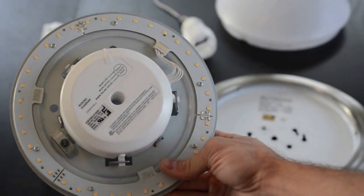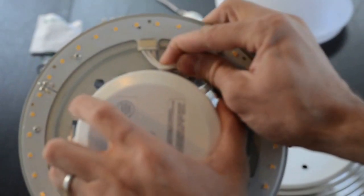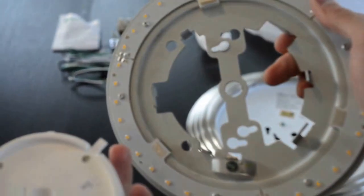The Terralux LED engine comes in two distinct parts: the driver and the LED board. Disconnect the wire from the two, twist and you're ready to go.